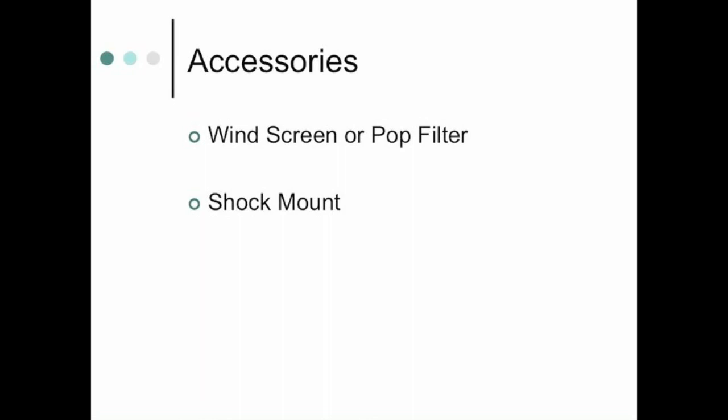Windscreens, pop filters, and shock mounts are studio accessories you probably wouldn't use in a live situation. The windscreen and pop filter don't affect sound quality as much as they protect the microphone from blasts of air. A pop filter is for when you hit a 'P' — that burst of air can really rattle a sensitive microphone. They break up that burst of air by passing it through a piece of cloth. That's primarily what they're used for.